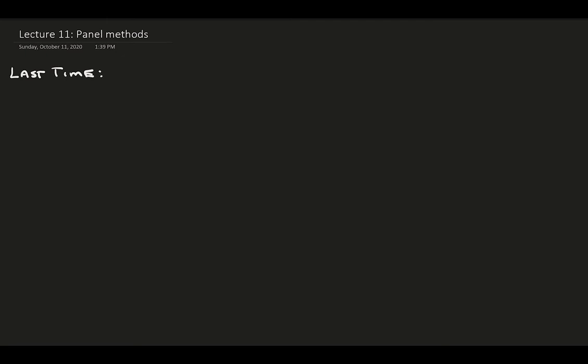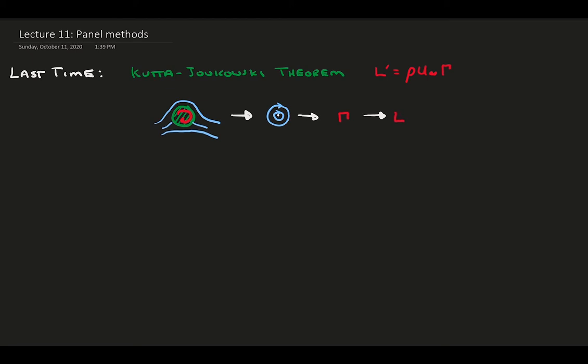Hello, and welcome to our 11th lecture on aerodynamics. Last time, we discussed the Kutta-Joukowsky theorem, a way to calculate the lift in an incompressible and inviscid flow with the circulation. We derived the relation through an example by exploring the rotating cylinder flow in more detail. This taught us that the rotating cylinder had the vortex elemental flow, which added circulation leading to lift.